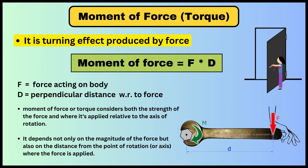The next very important term is moment of force, or torque. Torque is the turning effect produced by a force. Consider the example of a door — one end is fixed and we apply force at the other end, producing a turning effect. That turning effect is the torque. It depends on both the applied force and the distance between the fixed end and the point where force is applied.